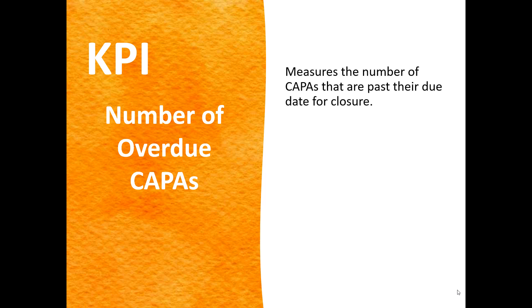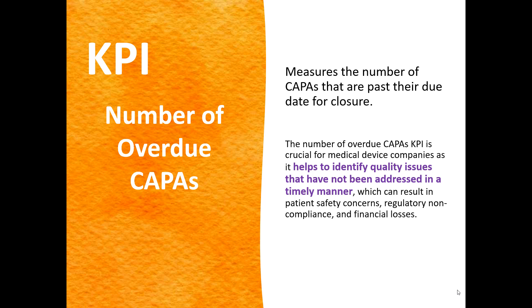Another KPI could be the tracking number of overdue CAPAs. When you open a CAPA, you should set a closure date for it — you need to ensure you know when you want to have the CAPA closed by. You should view CAPAs as mini projects: if you start a project, you need a start date and a proposed end date. Therefore, you should also be tracking CAPAs that pass their due date. If you have a lot of overdue CAPAs, that would be very concerning. A company should action those overdue CAPAs and give them more resources to ensure they are closed out quickly.